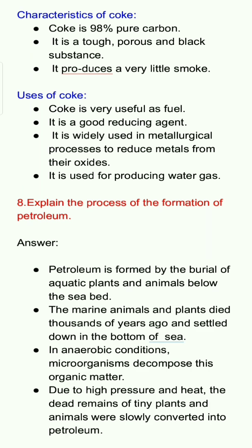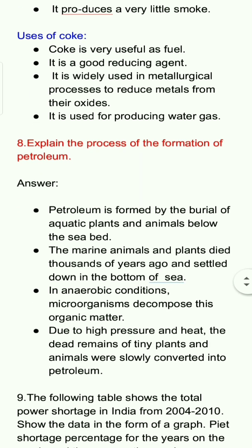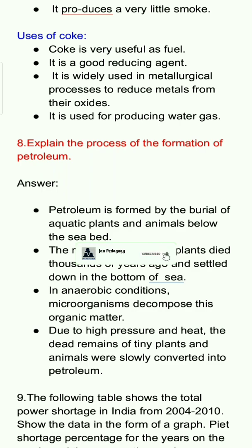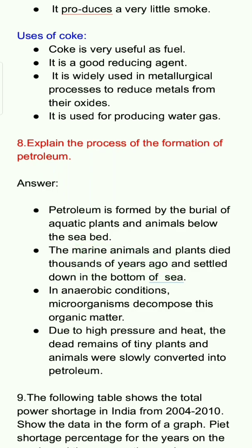Question 8: Explain the process of the formation of petroleum. Answer: Petroleum is formed by the burial of aquatic animals and plants below the seabed. The marine animals and plants died thousands of years ago and settled at the bottom of the sea. In aerobic conditions, microorganisms decompose this organic matter. Due to high pressure and heat, the dead remains of tiny plants and animals were slowly converted into petroleum.